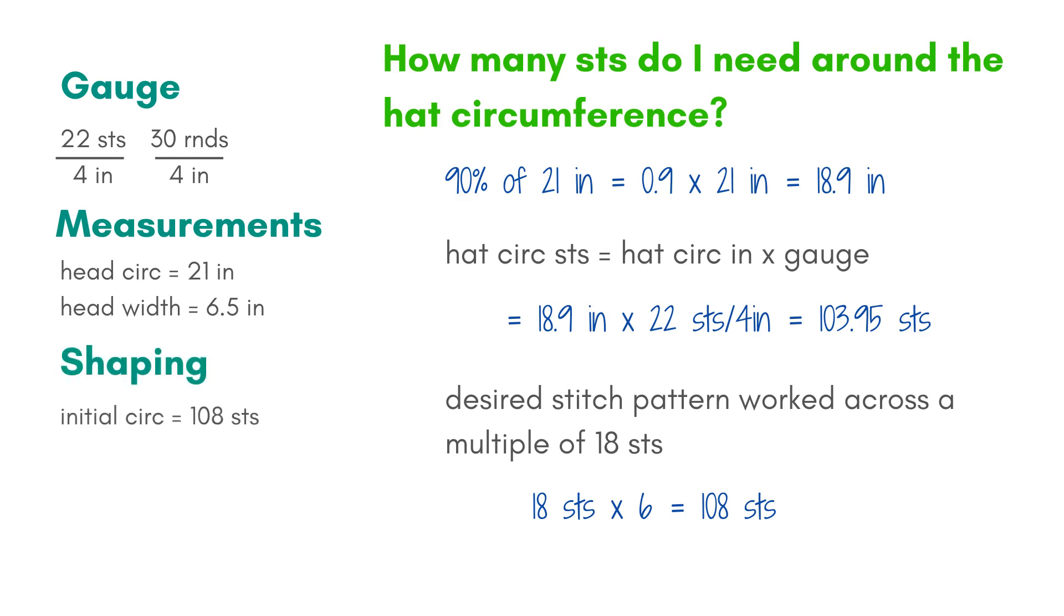108 stitches is close enough to give me a decent fit, so I knew my stitch pattern would work. Before we do any more math, I'm going to add that to the information I know about my hat shaping. I know that the initial circumference of my hat is 108 stitches.